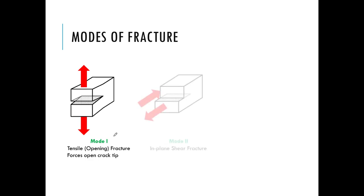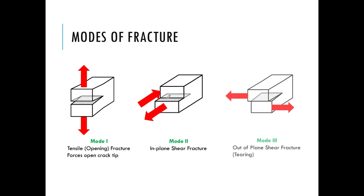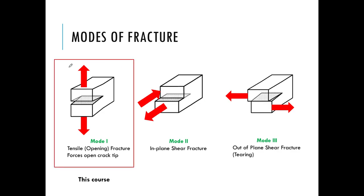In Mode 2, we have in-plane shearing which leads to shearing propagation of the crack. Mode 3 involves out-of-plane shearing, leading to a tearing mode of fracture. In this course we will only look at Mode 1 — the tensile opening fracture mode — because this is the most dominant one in terms of real-world fracture, and materials are more susceptible to failing in this mode.